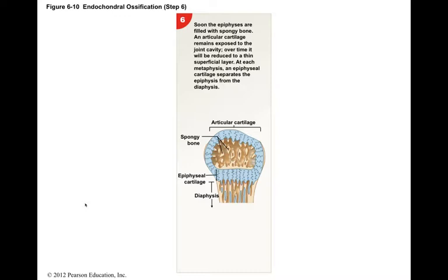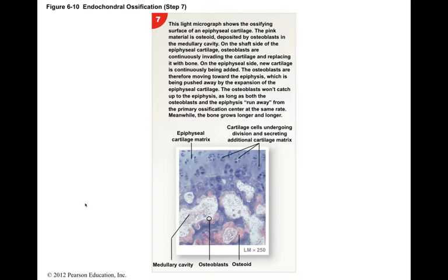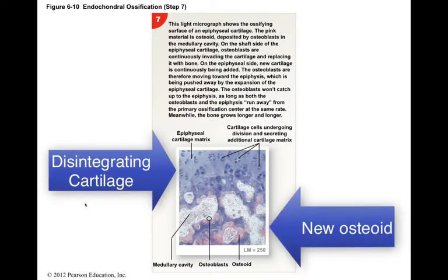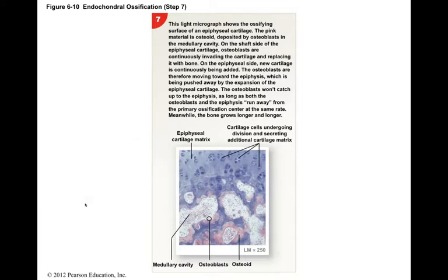At the metaphysis, a relatively narrow cartilaginous region called the epiphyseal cartilage, or epiphyseal plate, now separates the epiphysis from the diaphysis. The epiphyseal cartilage is also known as the growth plate. This micrograph shows the interface between the degenerating cartilage and the advancing osteoblasts. As long as the epiphyseal cartilage continues to grow at its epiphyseal surface, the bone will continue to increase in length.